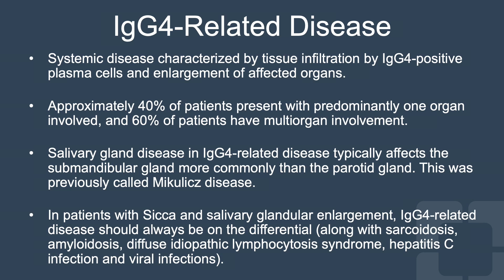This was previously known as Mikulicz's disease. In patients with SICA and salivary glandular enlargement, IgG4-related disease should always be on the differential, along with other conditions such as sarcoidosis, amyloidosis, diffuse idiopathic lymphocytosis syndrome commonly associated with HIV and hepatitis C infection, as well as other viral infections.